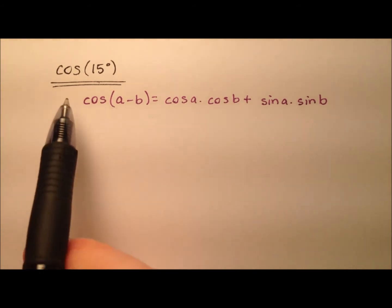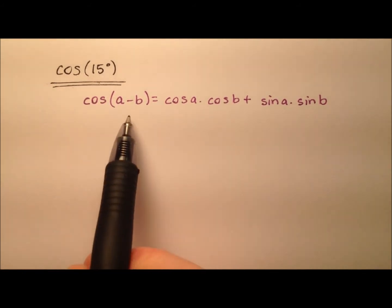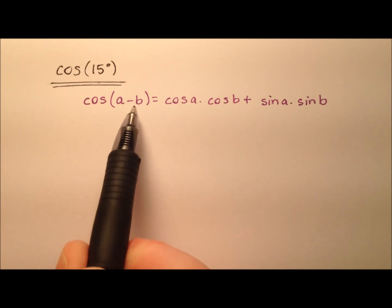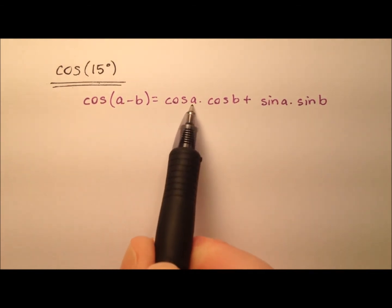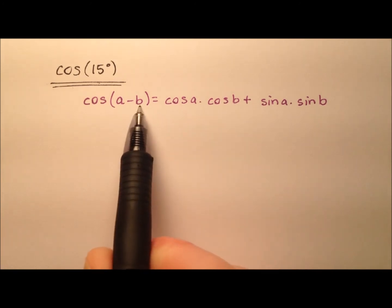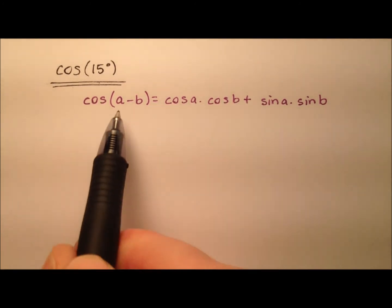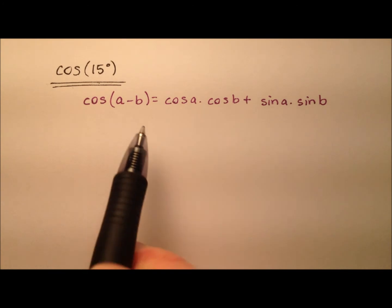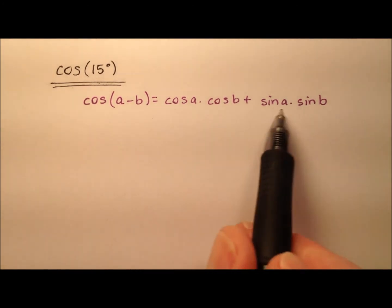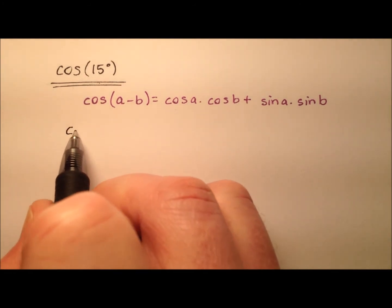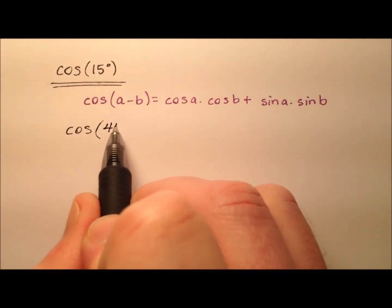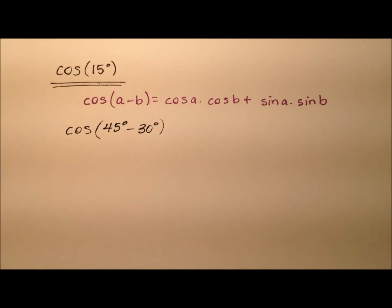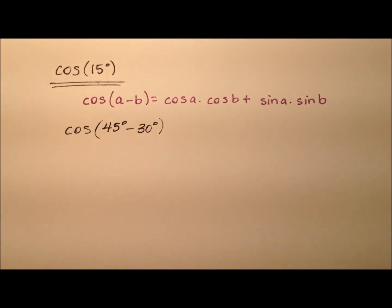Here in this second method, we're still looking for the cosine of 15 degrees, and this time we're going to use the difference identity for cosine, which says that the cosine of two angles being subtracted expands as: cosine of a times cosine of b, plus sine of a times sine of b. We need two angles that subtract to make 15 degrees and for which we know the sine and cosine. So let's use the cosine of 45 degrees minus 30 degrees, because those are both angles we know a lot about, and they subtract to make 15 degrees.